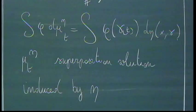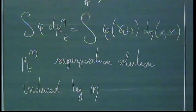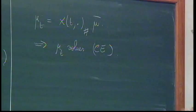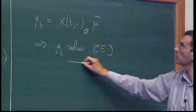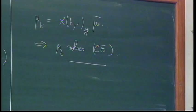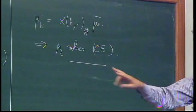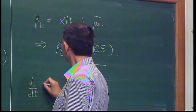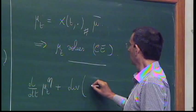I call mu_t a superposition solution — the superposition induced by eta. By the same computation seen yesterday: if we have a unique trajectory and push forward an initial measure mu-bar, then mu_t solves the continuity equation. The same phenomenon occurs when you have many trajectories, provided all trajectories are solutions to the ODE. One can prove that d/dt mu_t^eta plus the divergence of b_t mu_t^eta equals zero.